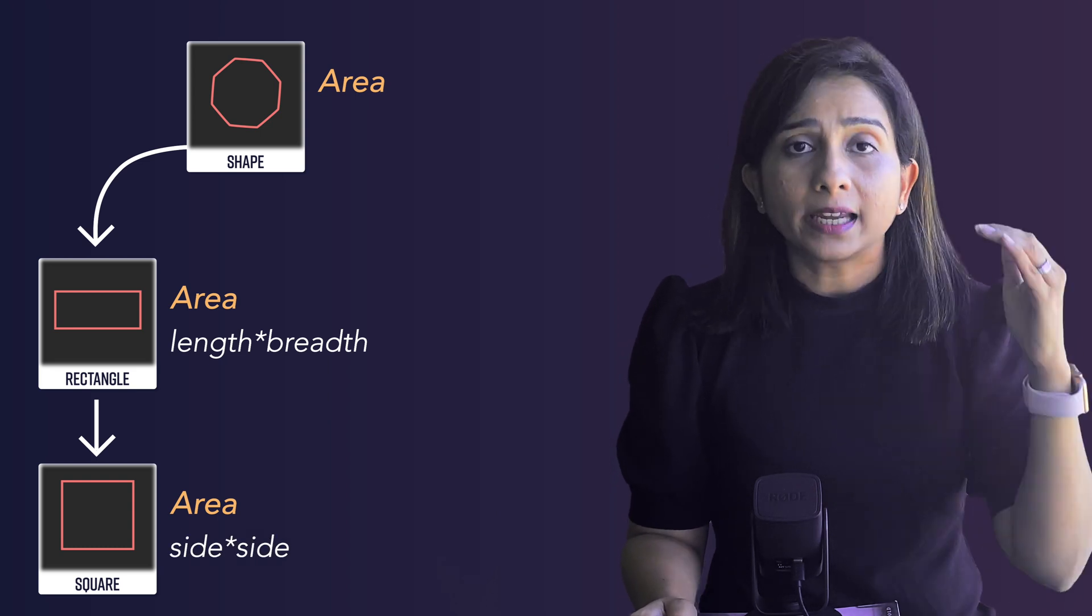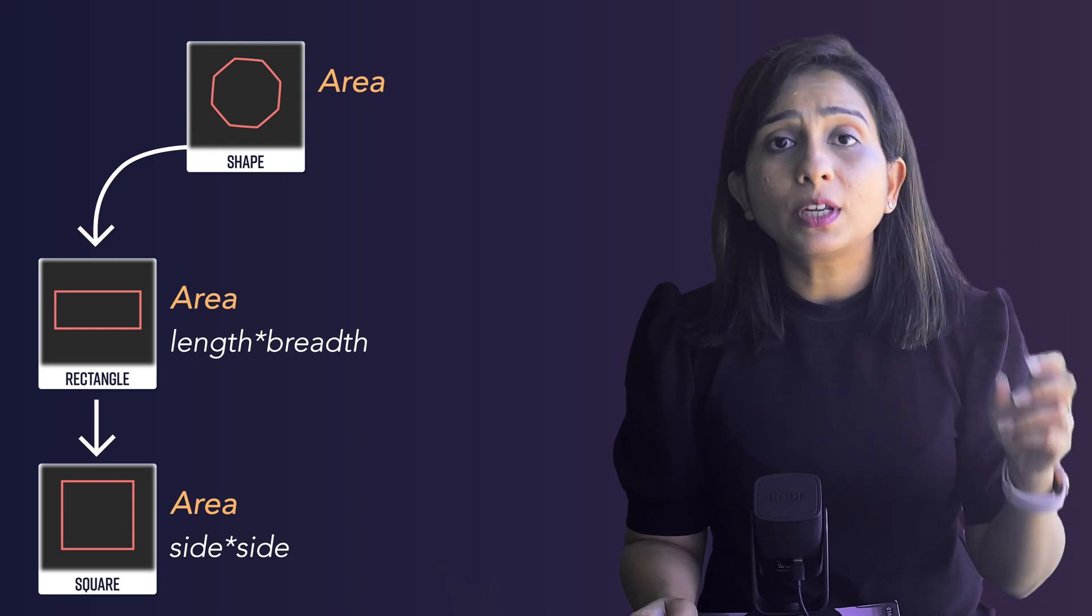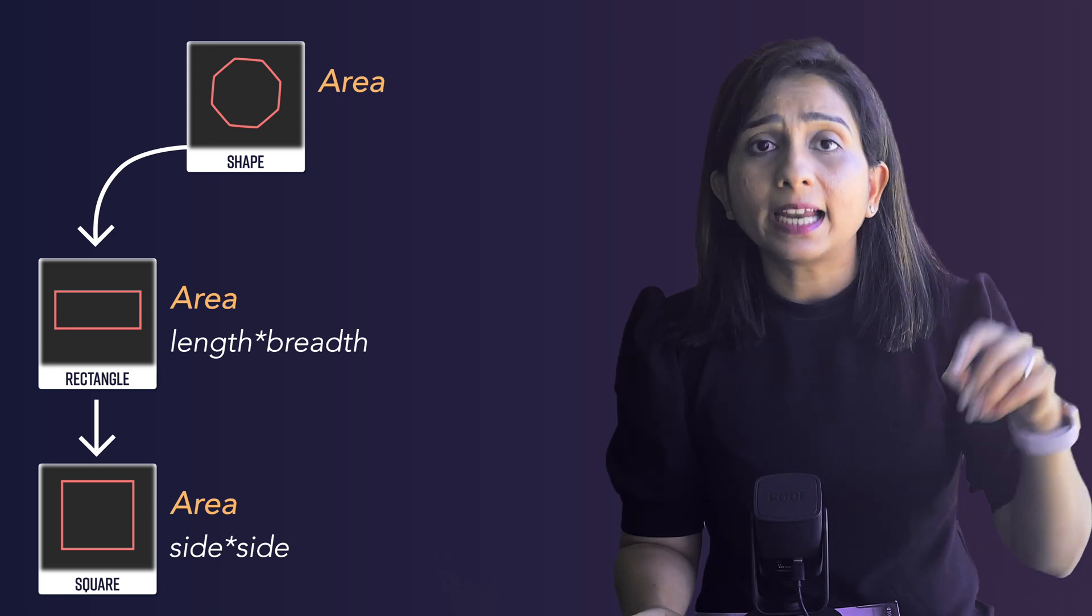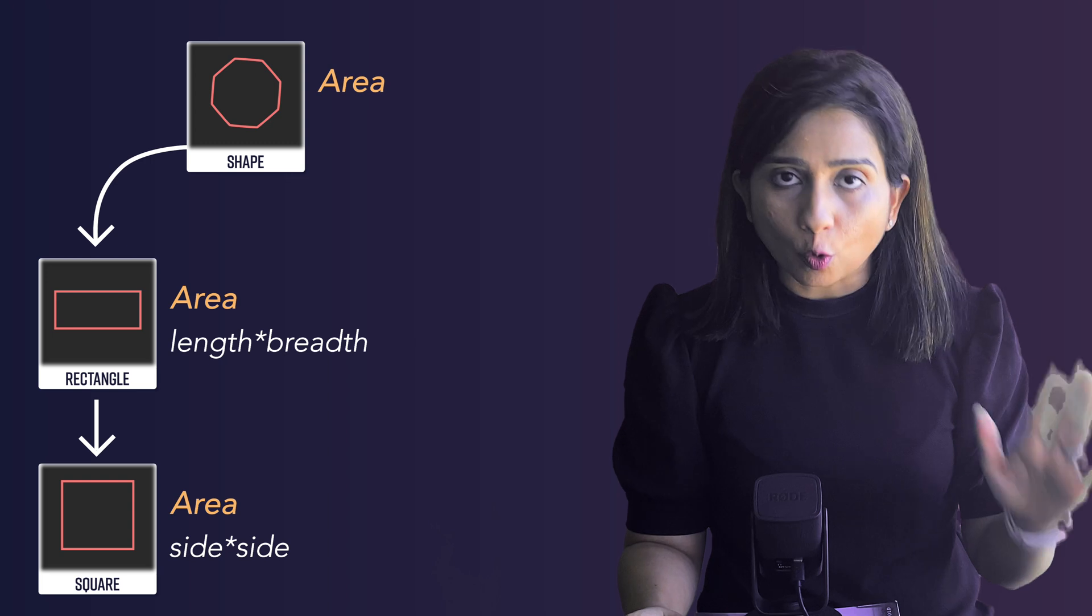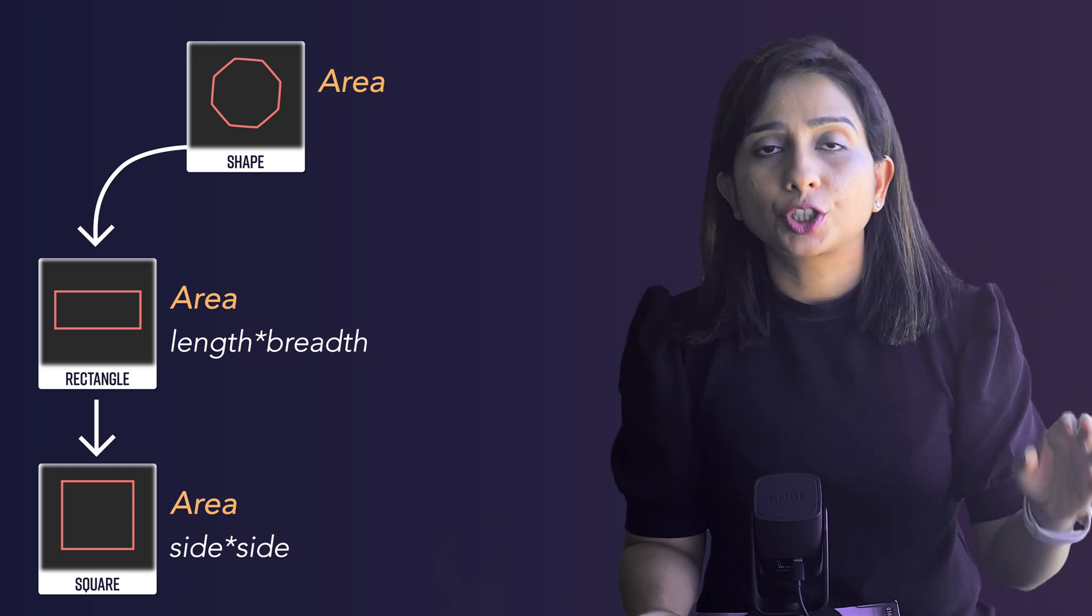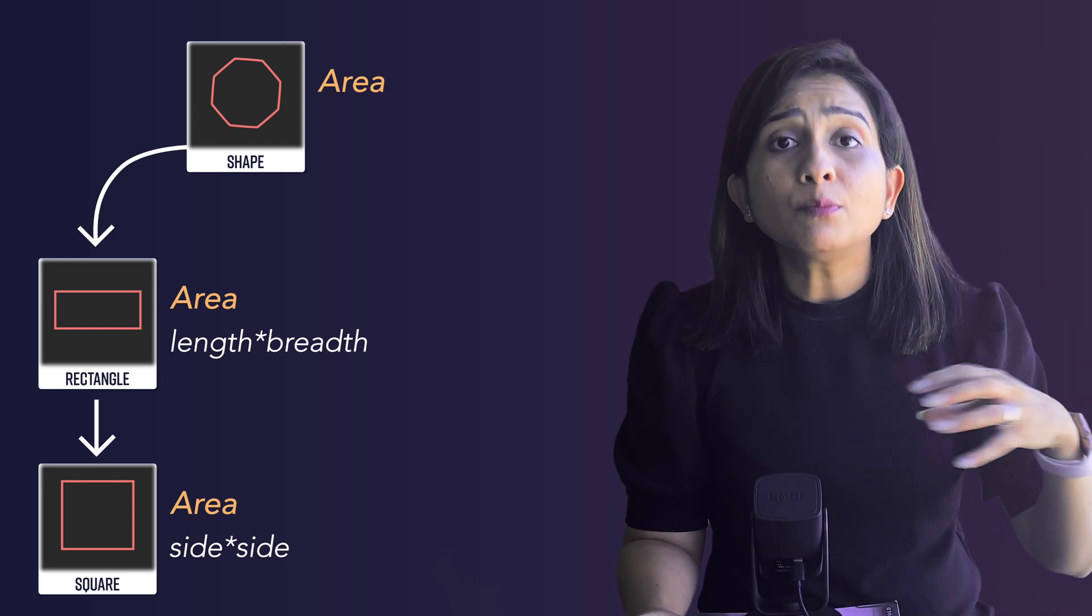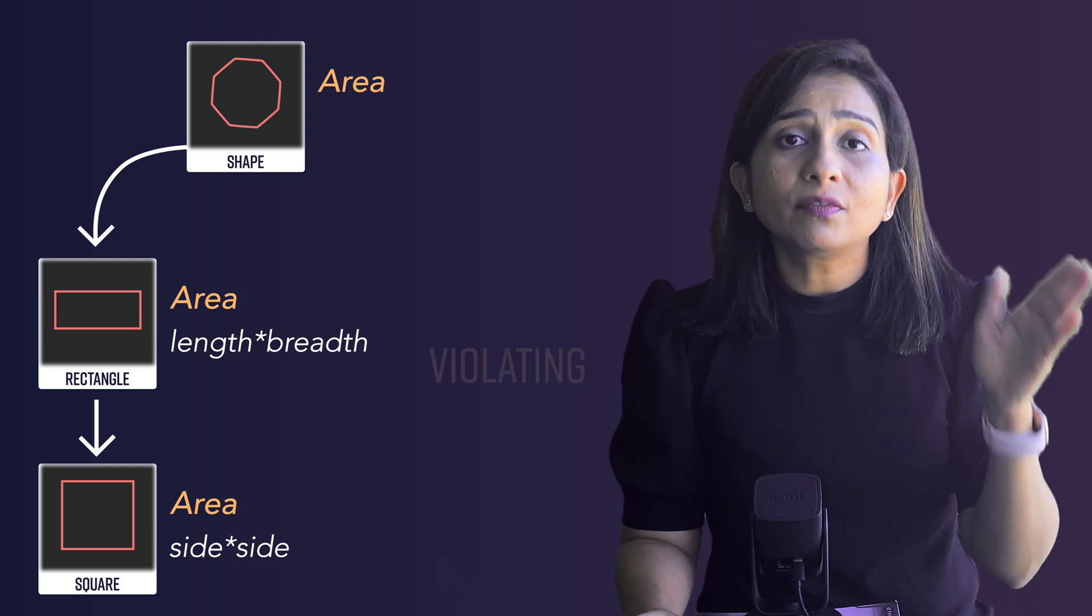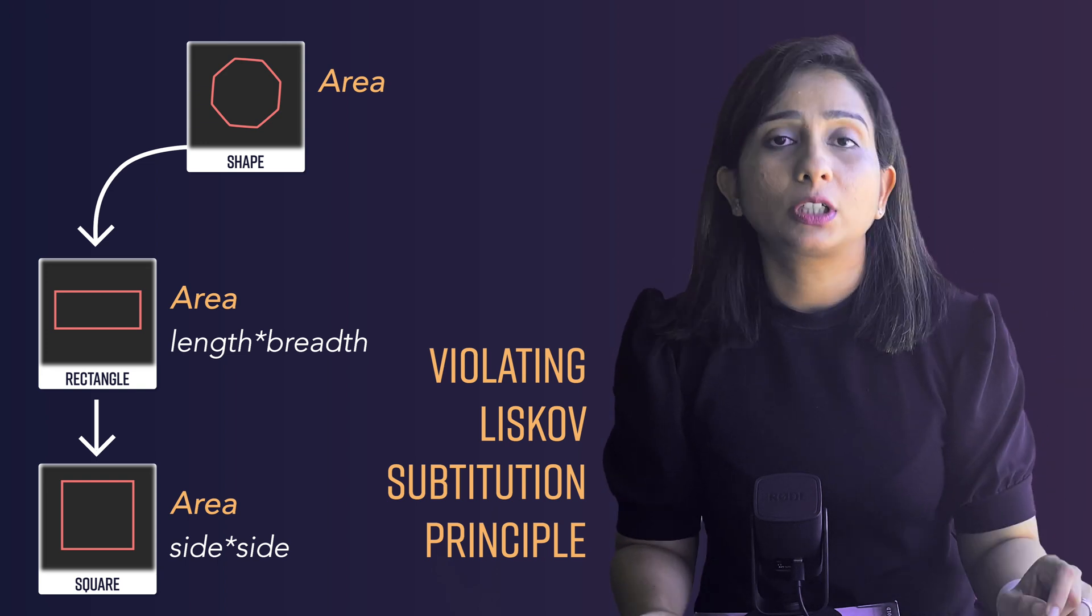Now you see since we have inherited Square from the Rectangle, in the constructor of the Square we have to make a workaround where you have to call the constructor of Rectangle with S and then you have to set length as S and width as S. This seems okay. This seems logical but the problem is anytime you are going to do any operation on Square or Rectangle you have to be very mindful about Square basically mocking the behavior of Rectangle and hence this is actually violating the principle of Liskov Substitution because the inheritance done here is not correct.